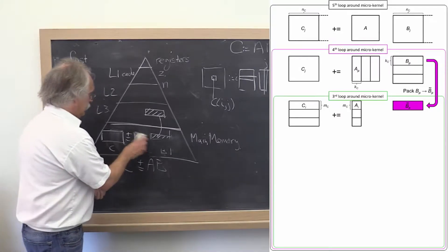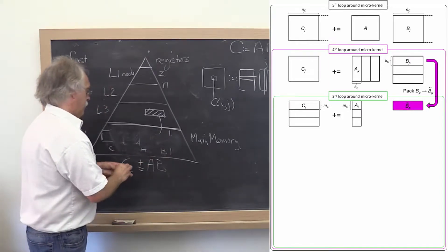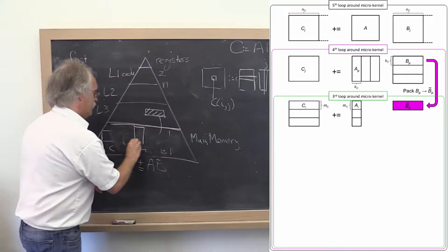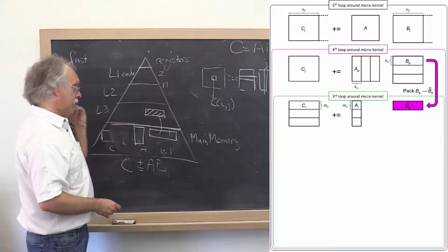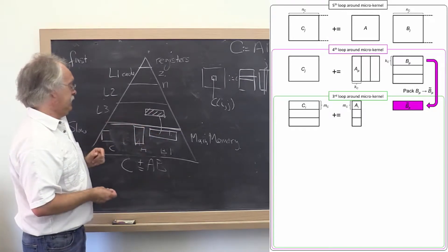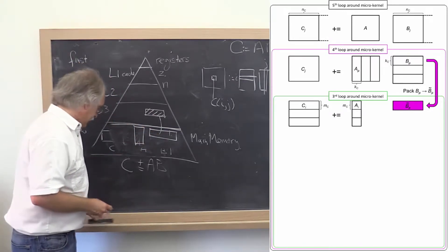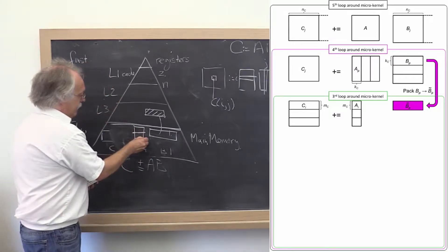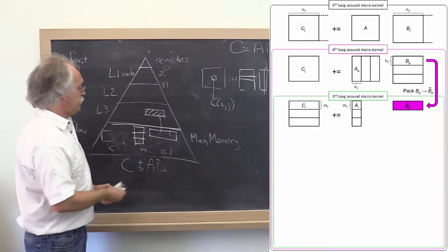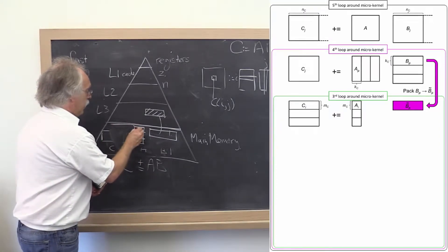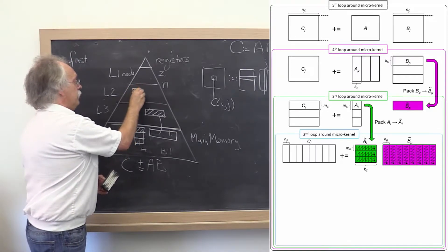So notice that now we're really thinking of doing this operation right here. That's the next level down. We're down to having to do this times that as part of a bigger problem. This actually is now quote unquote in the L3 cache. And at the next level, what we do is we partition A into blocks like that. And then we arrange the computation in such a way that a block of A ends up staying in the L2 cache.